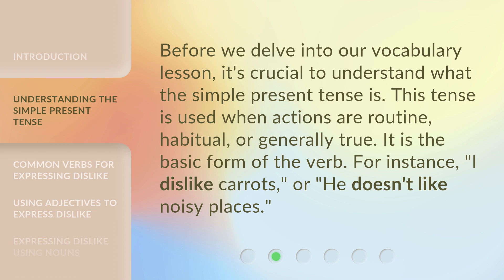Before we delve into our vocabulary lesson, it's crucial to understand what the simple present tense is. This tense is used when actions are routine, habitual, or generally true. It is the basic form of the verb. For instance, I dislike carrots, or he doesn't like noisy places.